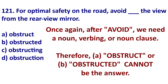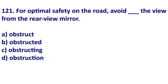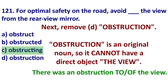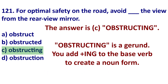So after 'avoid,' I need a noun, verb-ing, or a noun clause. For this question, we can eliminate A and B because these are verbs — 'avoid obstruct' is wrong because obstruct is a verb, and 'avoid obstructed' is a past tense verb. Now we have C and D. We eliminate D because 'obstruction' is a noun, so it will not have a direct object. This question has a direct object — 'the view.' If I use obstruction, I'd have to say 'an obstruction to or of the view.' Therefore, the answer is C — a gerund.